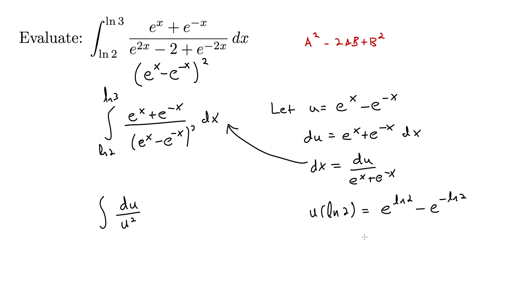So this becomes e to the natural log of 2 minus e to the natural log of 2 to the negative 1. But 2 to the negative 1 is 1 half. So that's the real kicker there. e to the natural log cancel out essentially they undo each other because they're inverses.